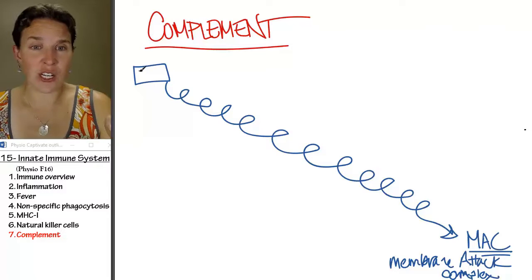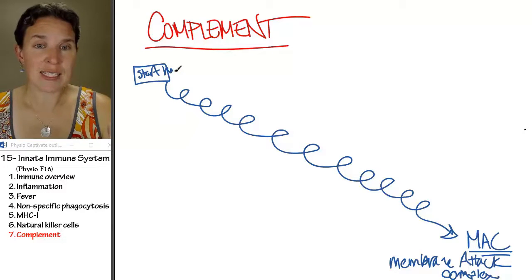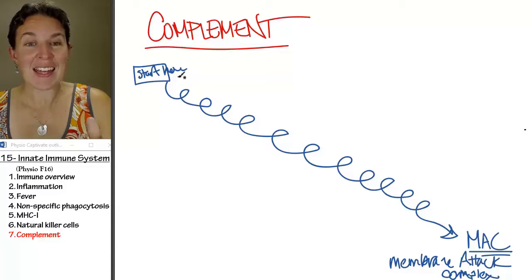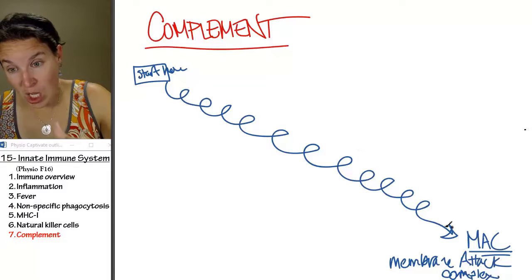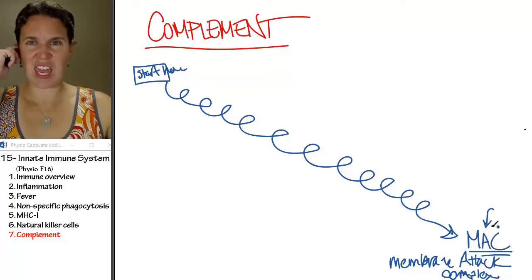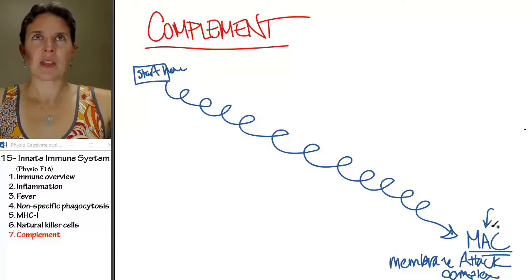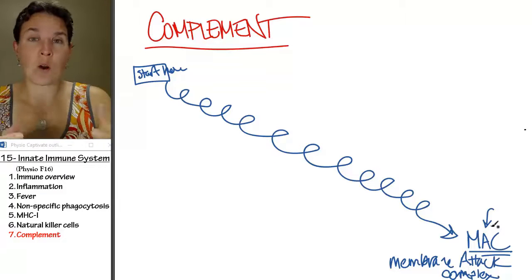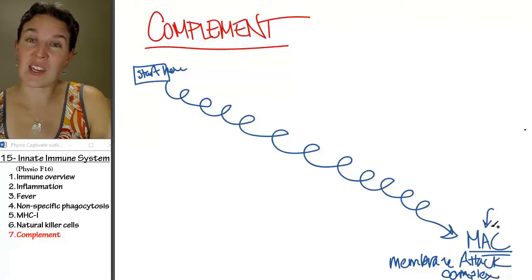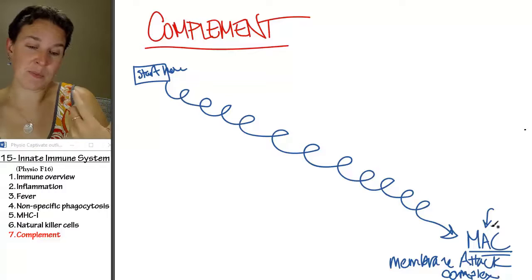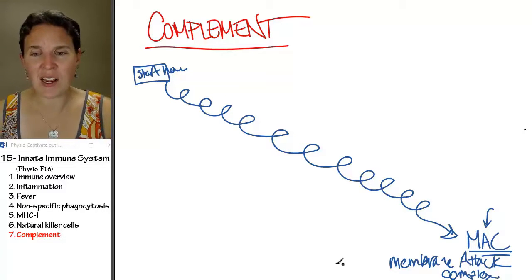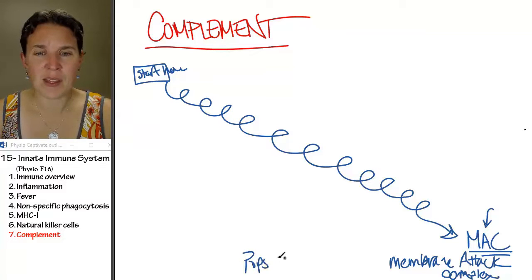Through the process — start here — something will initiate the complement cascade. And if all the proteins come along through the process, you'll actually end up with this thing that all the proteins come together and form. Essentially, it's almost like initiating apoptosis, because it creates a complex that pops the bad guy.